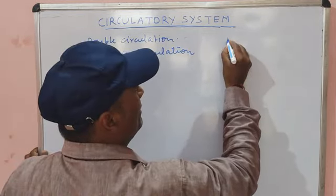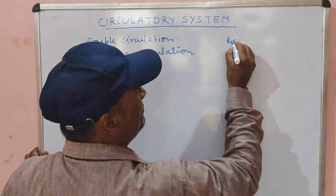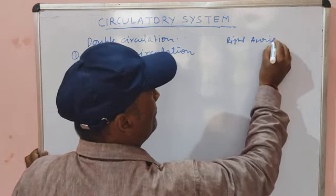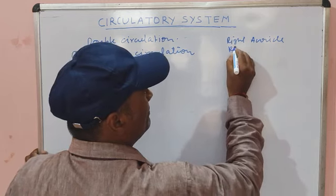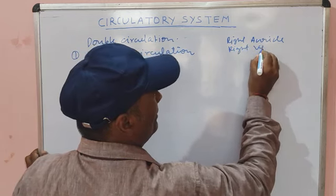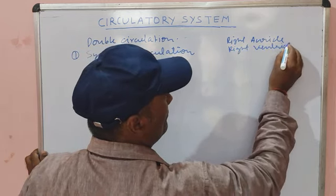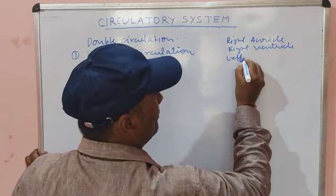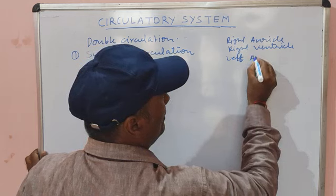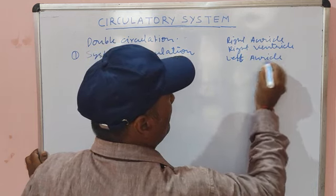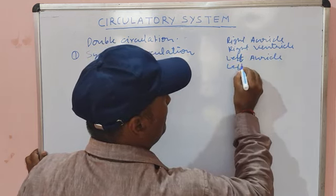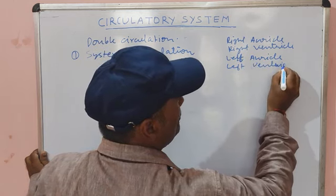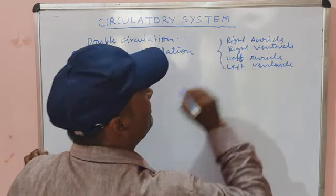Our heart has four chambers: right atrium, right ventricle, left atrium, and left ventricle. These are the four chambers of the human heart.